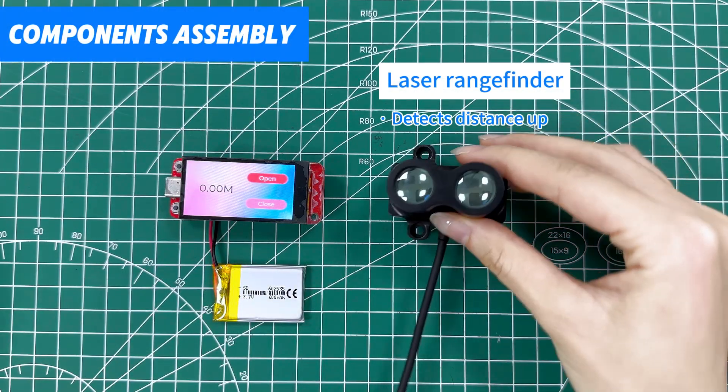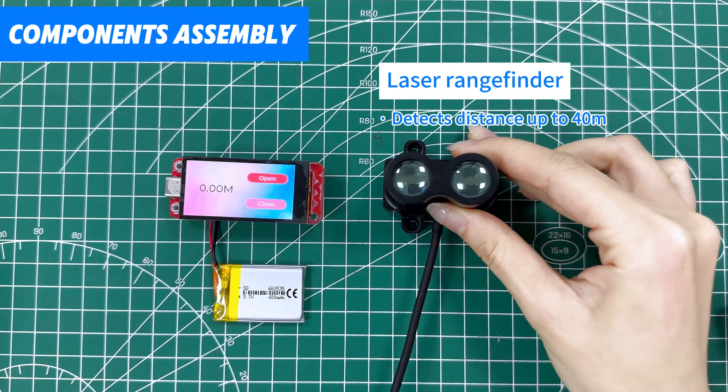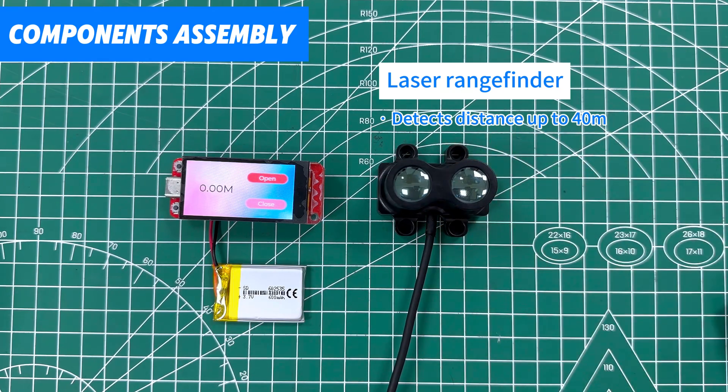This laser range finder is composed of two parts. The laser sensor has a sender and a receiver, and detects distance up to 40 meters with 3mm precision.